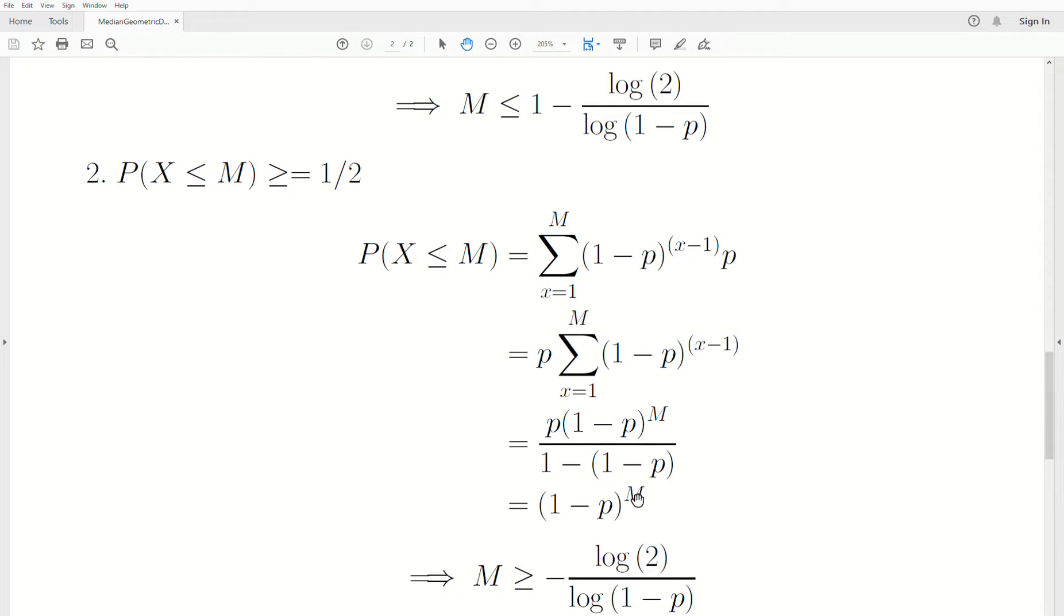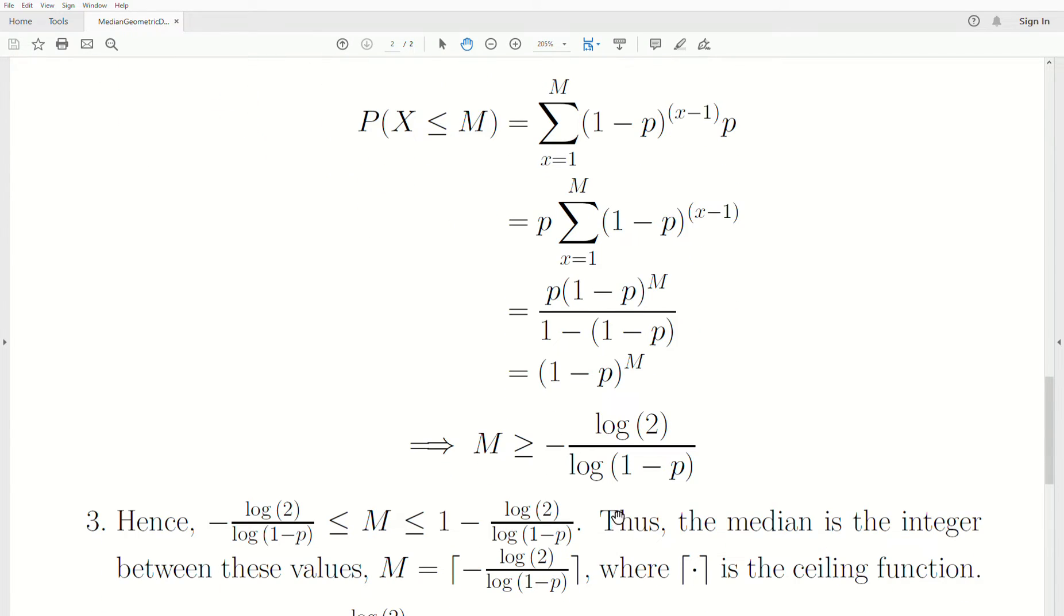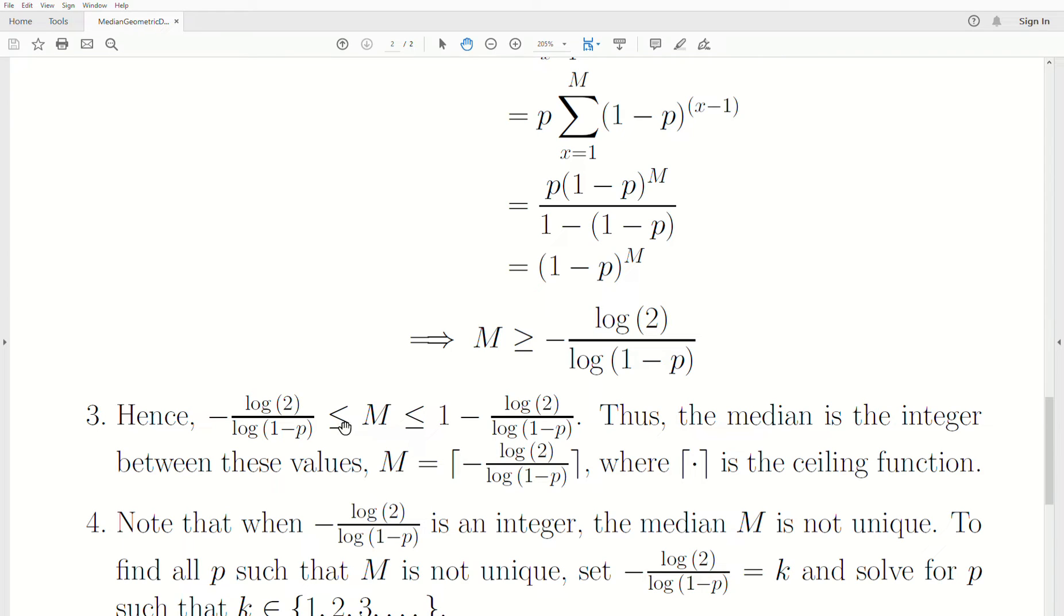Now we know that this is greater than or equal to one-half, and then we can back solve for M. So M is greater than -log(2) / log(1-p). Hence M is between these two quantities, so this number and one plus it.